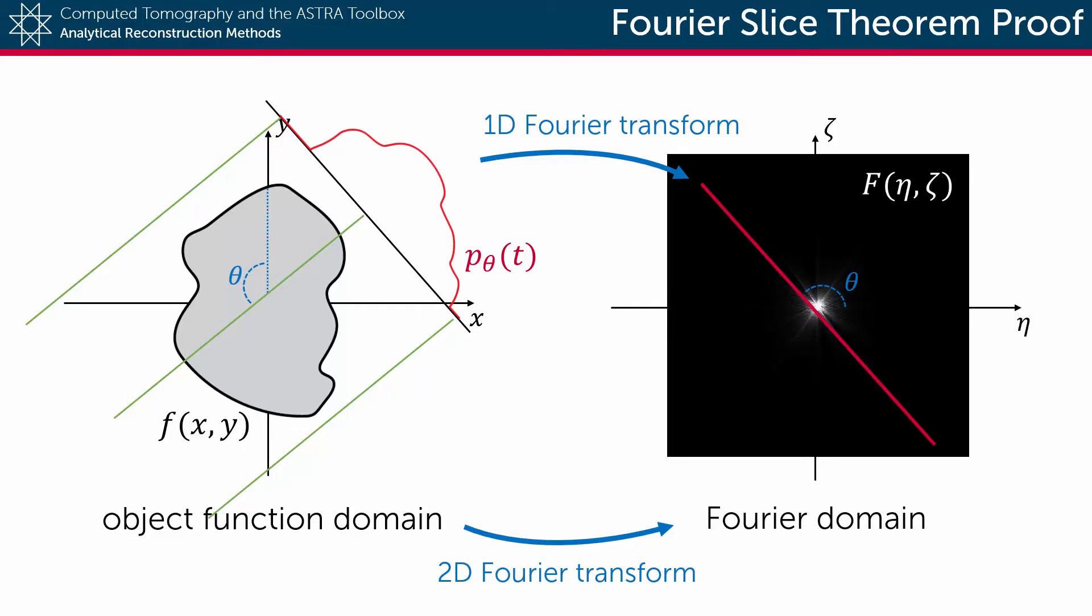In a previous video, we've discussed how a one-dimensional Fourier transform of a detector function at angle theta is equal to the slice through the origin at rotation theta of the two-dimensional Fourier space of the object function.